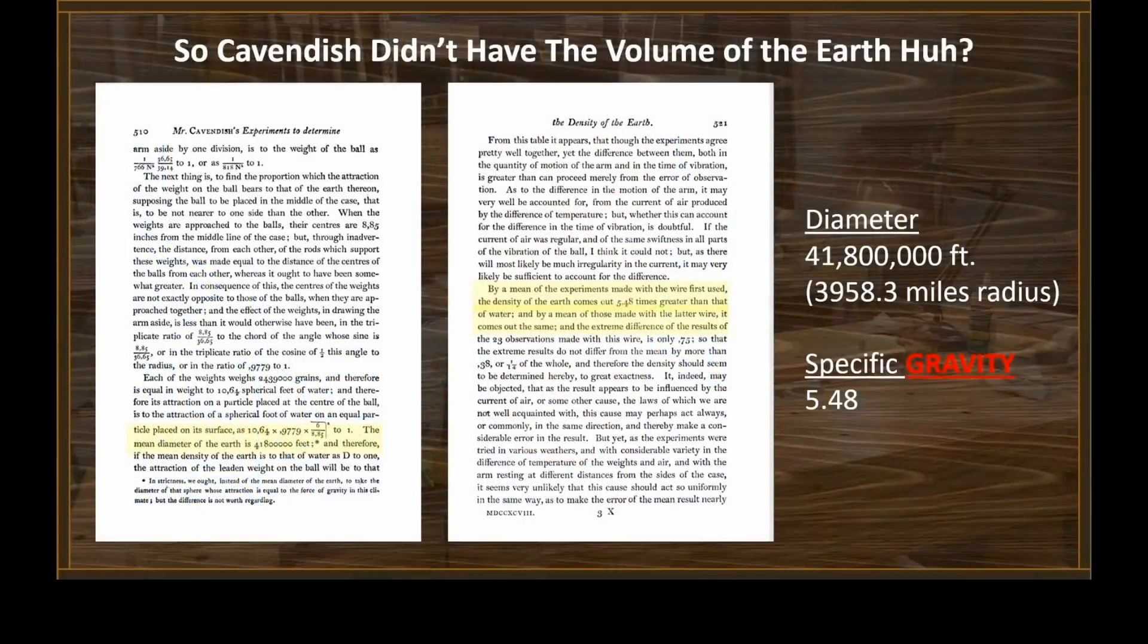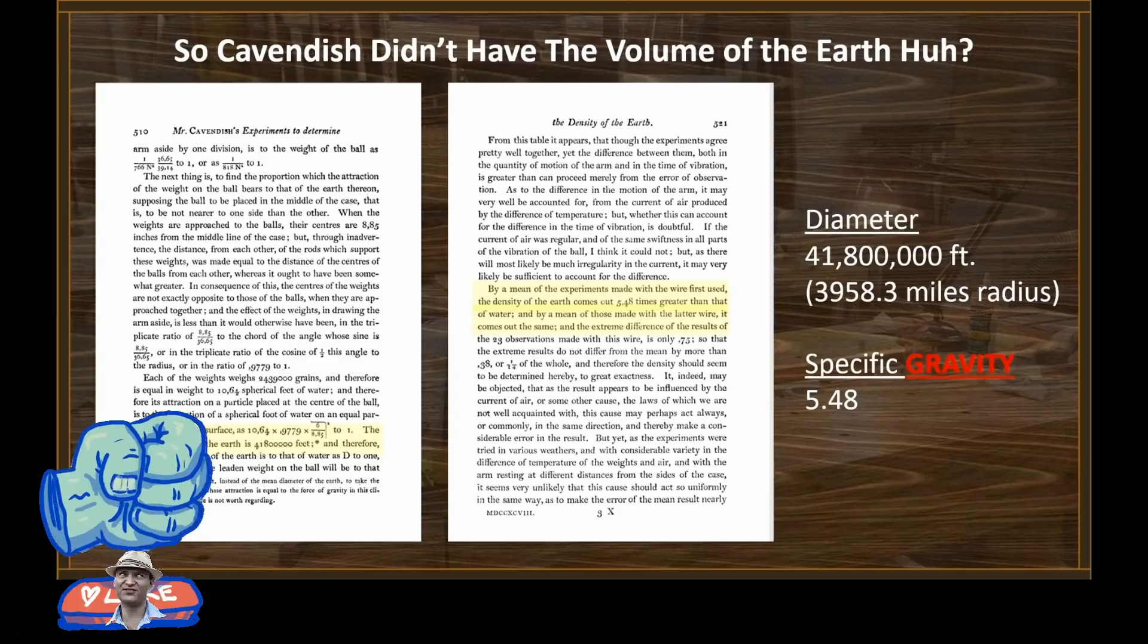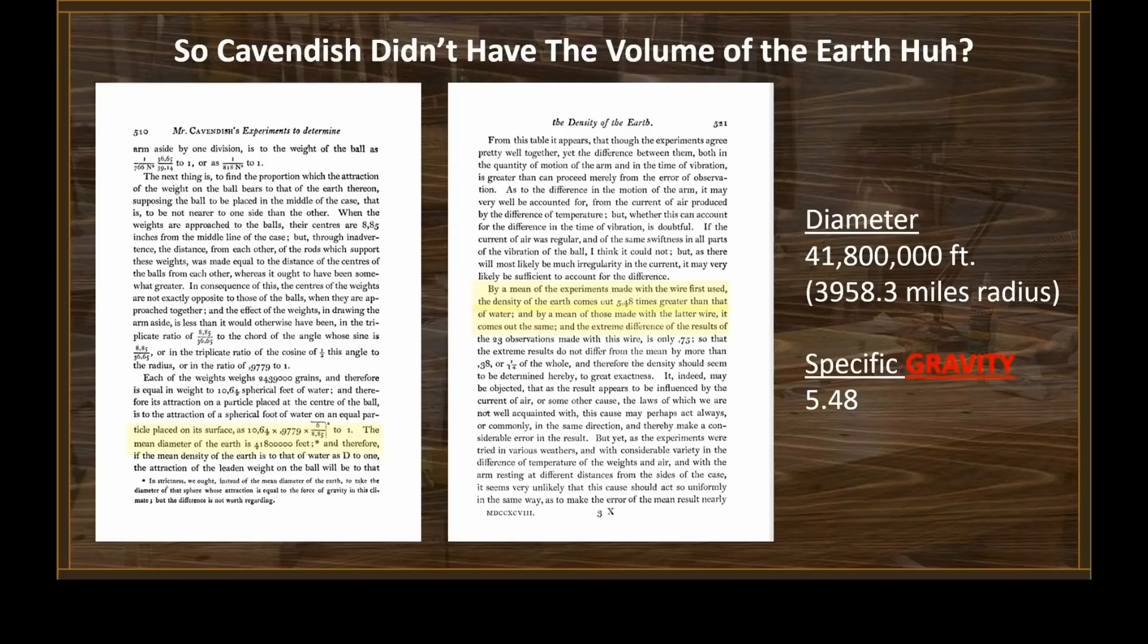The mean diameter of the Earth is 41,800,000 feet. That is 3,958.3 miles in radius. By a mean of the experiments made with the wire first used, the density of the Earth comes out 5.48 times greater than that of water. And by a mean of those made with the latter wire, it comes out the same. So Cavendish measured a specific gravity for the Earth of 5.48. What could we do with those two numbers?